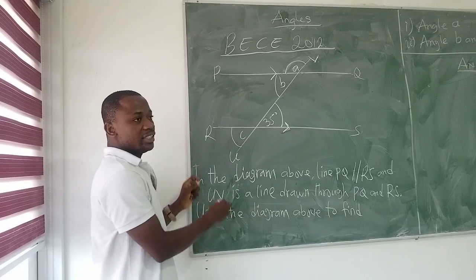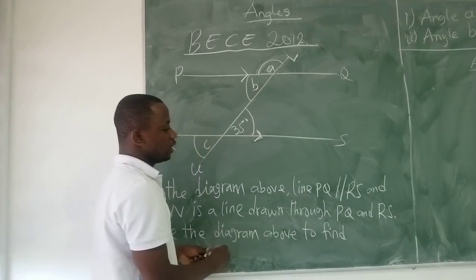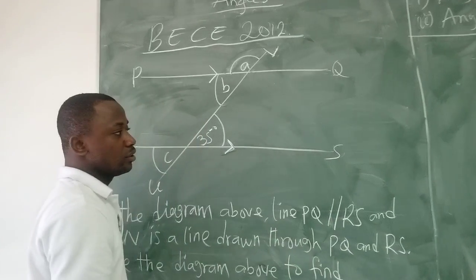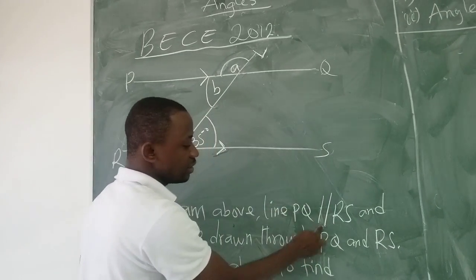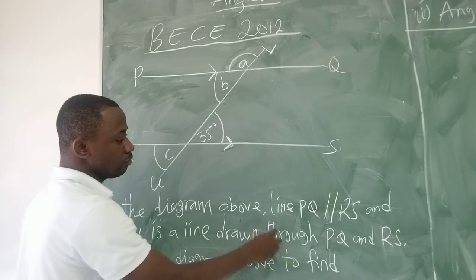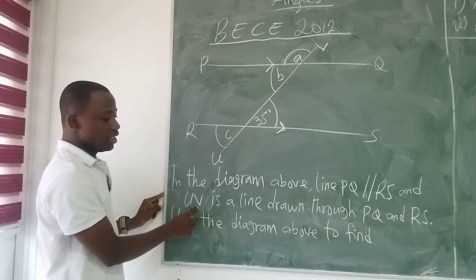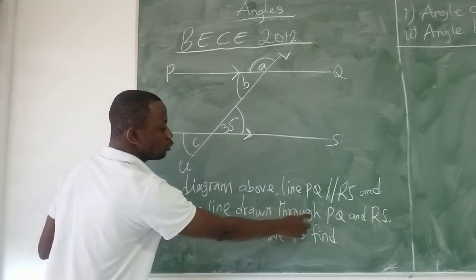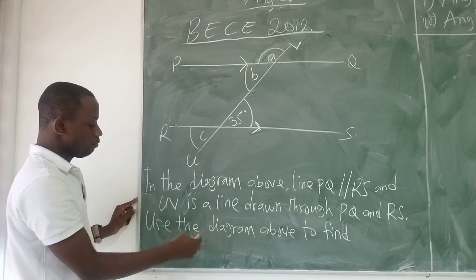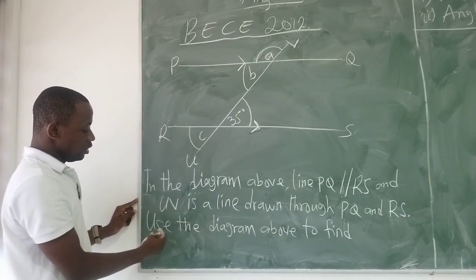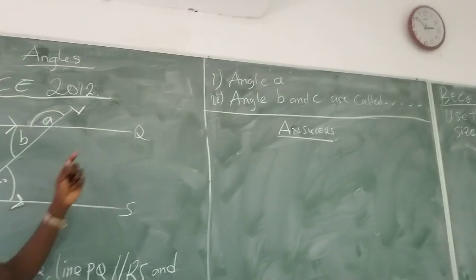It says that in the diagram above, line PQ is parallel to RS. PQ can be drawn as a straight line, parallel to RS, and UV is a line drawn through PQ and RS, which we term as the transversal line.